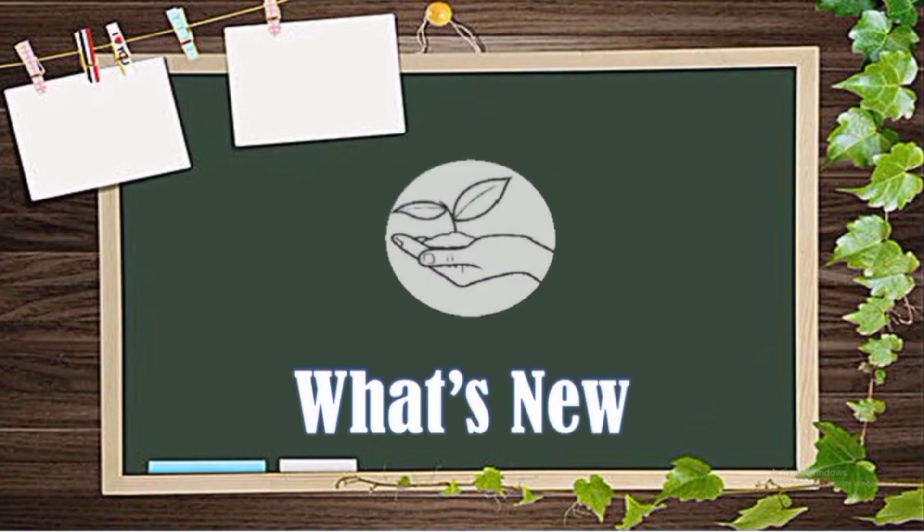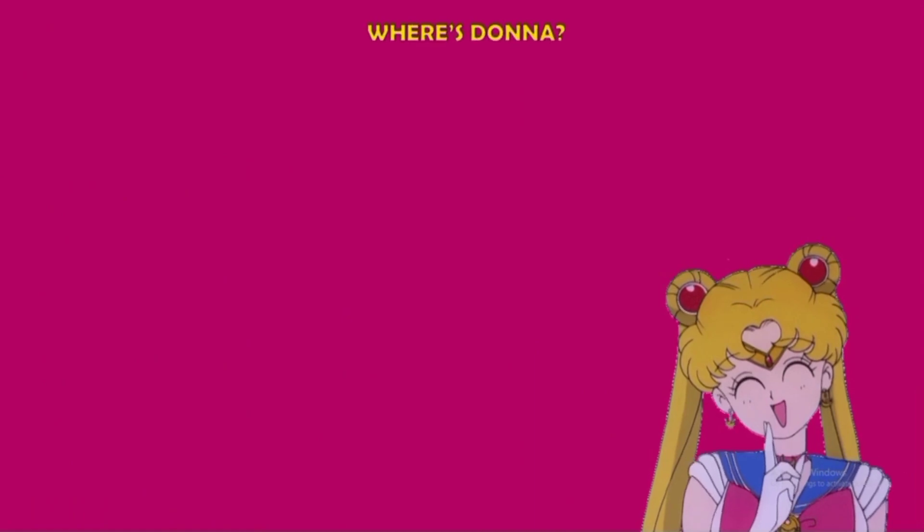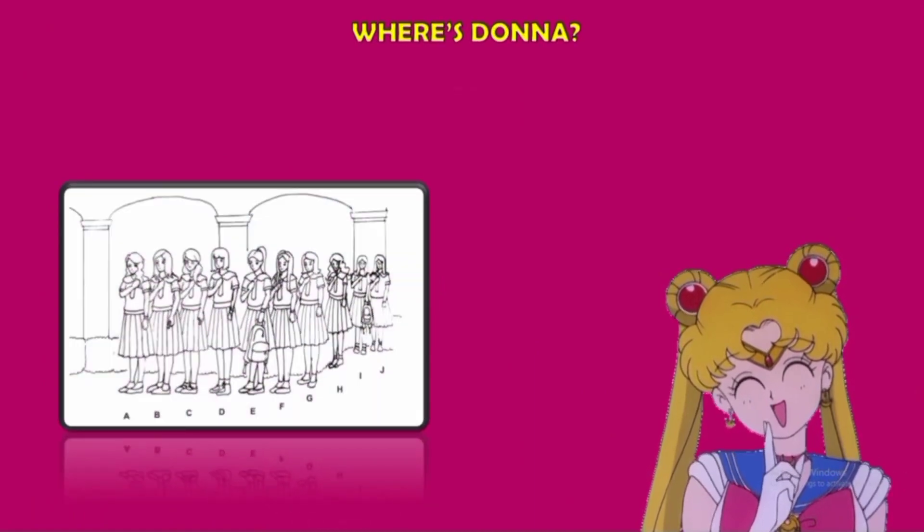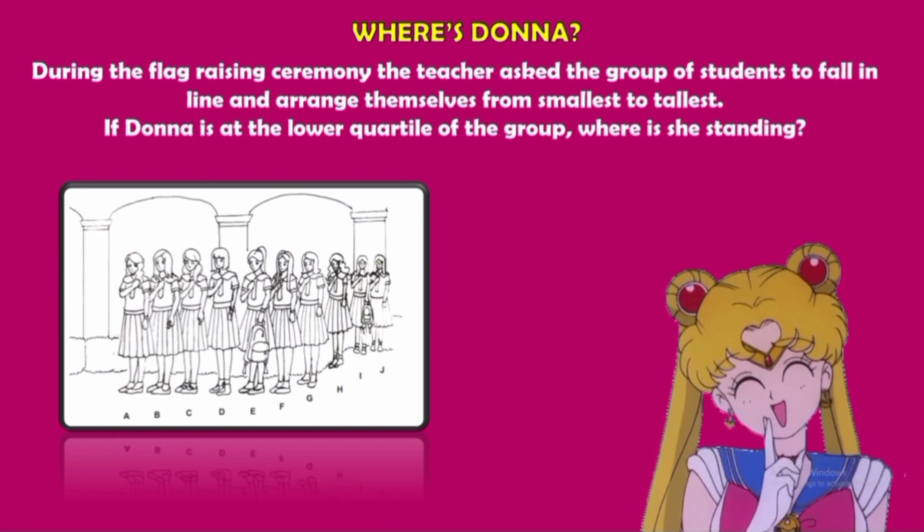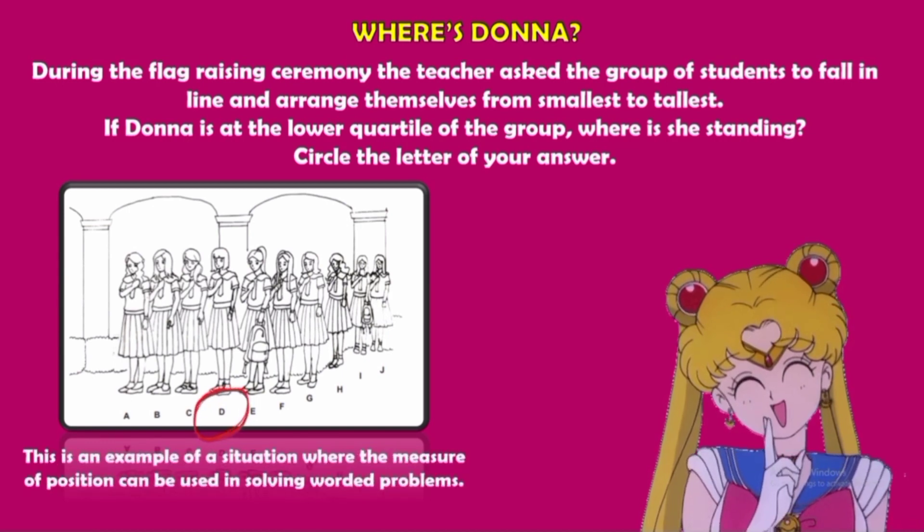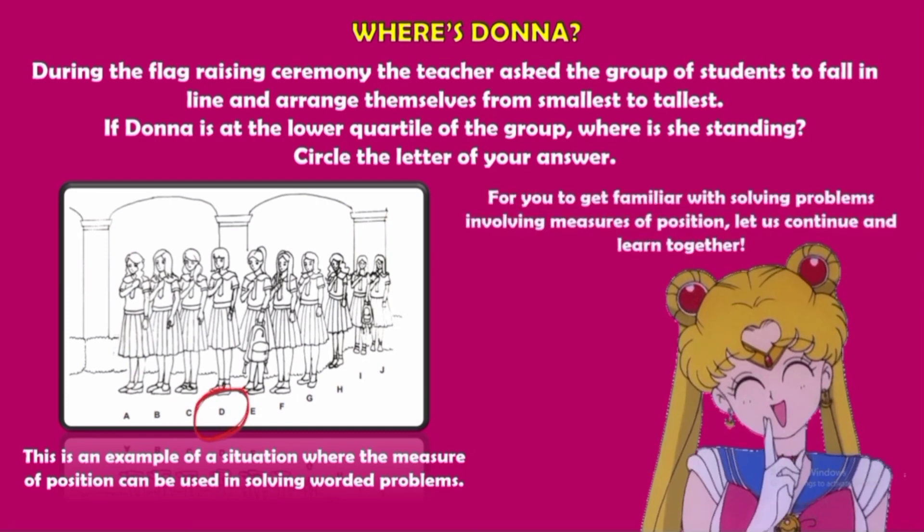What's new? Where's Donna? Now look at this given illustration. During the flag-raising ceremony, the teacher asks the group of students to fall in line and arrange themselves from smallest to tallest. If Donna is at the lower quartile of the group, where is she standing? Circle the letter of your answer. This is an example of a situation where the measure of position can be used in solving worded problems. For you to get familiar with solving problems involving measures of position, let us continue and learn together.